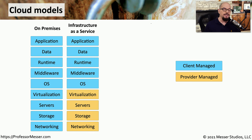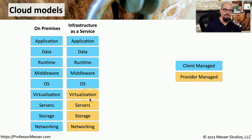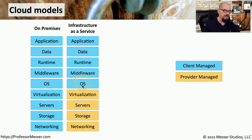If you wanted to move some of your on-premises infrastructure into a cloud-based infrastructure as a service model, you would have the networking, storage, servers, and virtualization hosted in the cloud at a cloud provider. All of the other pieces — the operating system, the middleware, the runtime, the data, and the application itself — would still be your responsibility to manage.